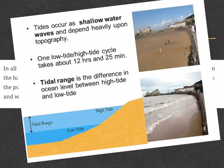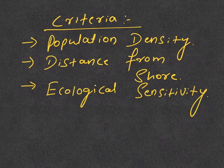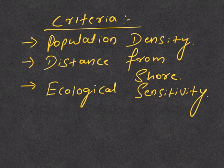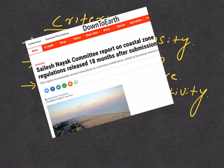The CRZ rules are applicable only between the high tide line and up to 500 meters from the high tide line. Several kinds of restrictions apply here depending on criteria such as the population of the area, the ecological sensitivity, the distance from the shore, and whether the area had been designated as a natural park or wildlife zone. In the last 28 years, these rules have been modified for nearly 34 times, making it the most amended law in the history of India.